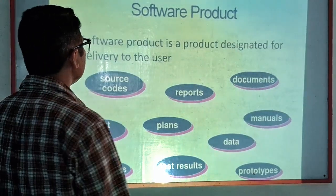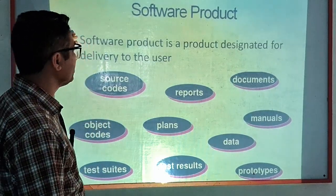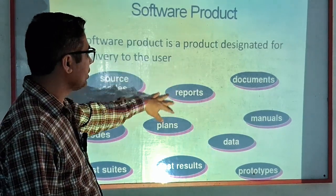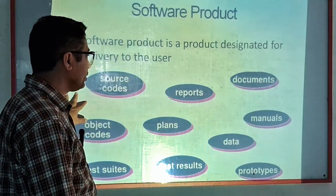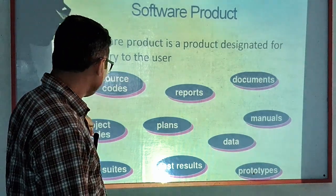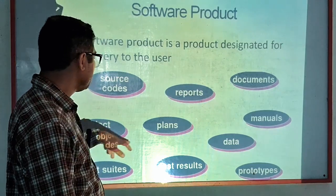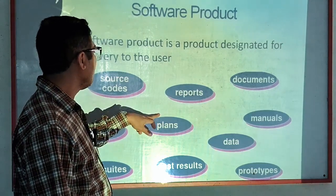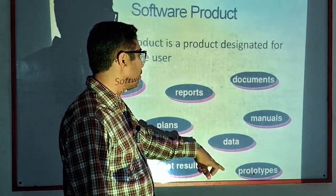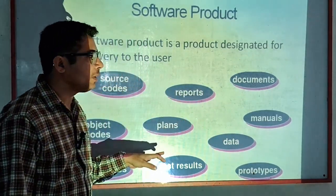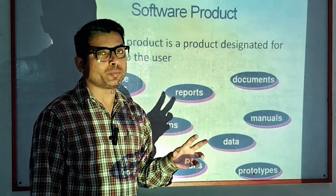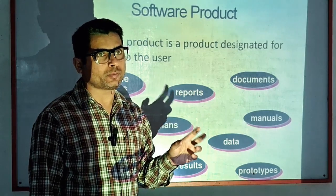A software product is designated for delivery to the user. The items developed and delivered as part of a software product include: source code, object code, test suites, test results, plans, reports, documents, manuals, data, and prototypes. All these things are provided to the customer purchasing the software product from the developers.